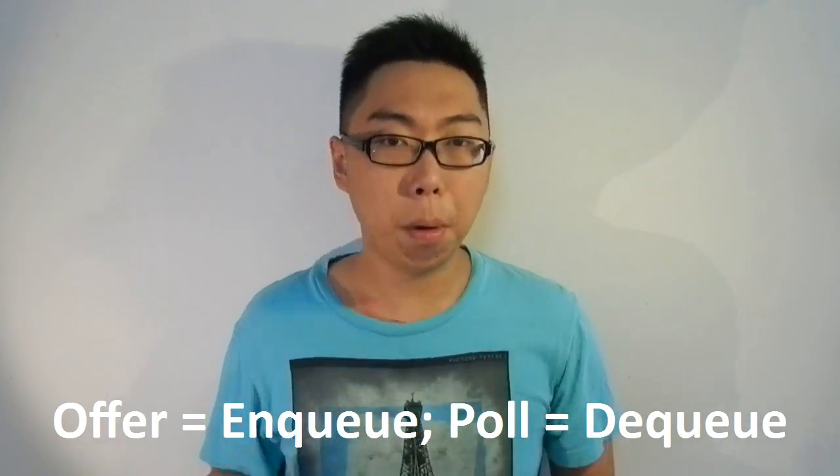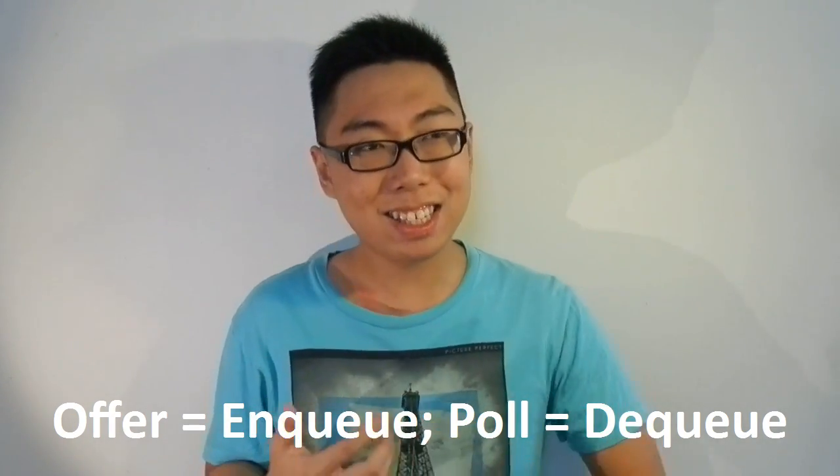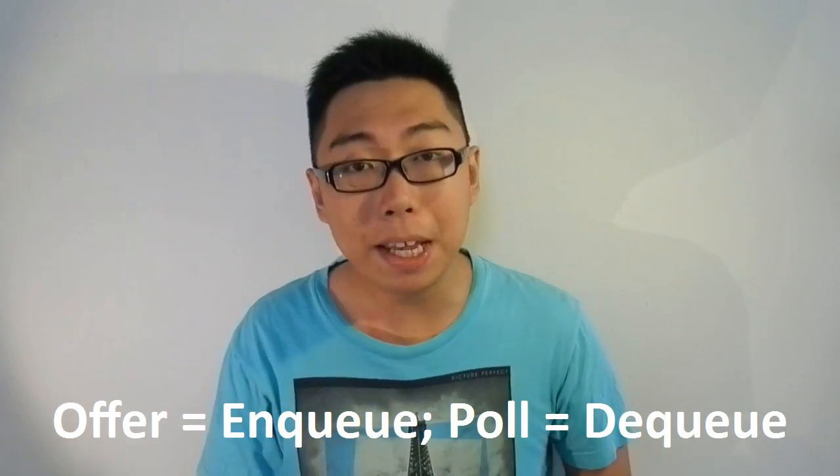Now, I'm not going to use the terms offer and poll since it is slightly less intuitive in terms of their meaning. I guess they do deserve a mention here in case you come across those terms. So alright, let us now take a look at how we're going to actually implement a queue.